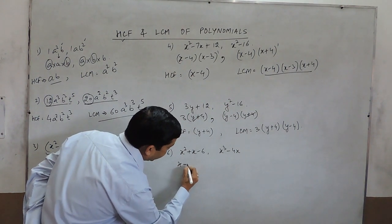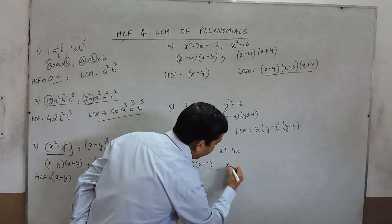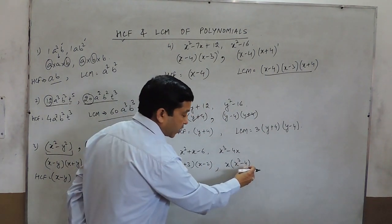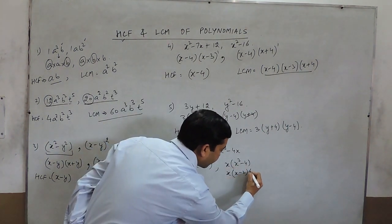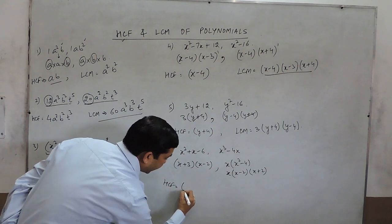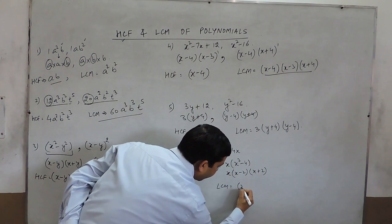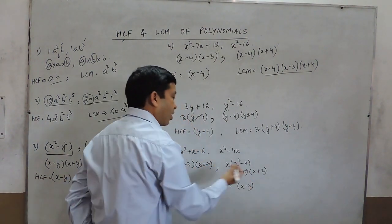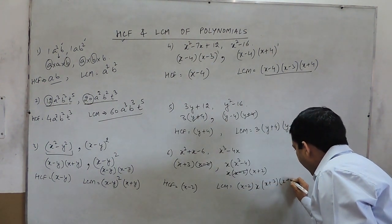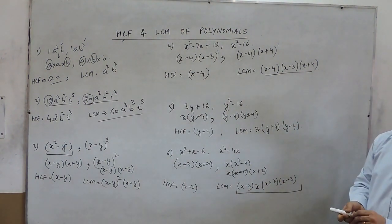One expression can be written as (x+3)(x-2). For the other, when we take x common, it becomes x(x²-4), which is in the form a²-b², so we can factor it further as x(x-2)(x+2). The common factor, or HCF, is (x-2). For the LCM, (x-2) is definitely a factor, and the remaining terms x, (x+2), and (x+3) are all included, making the whole expression the LCM of these two polynomials.